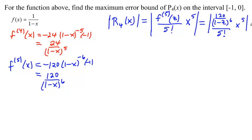Now, what we want to do is figure out the bound on that, this f of z part, or fifth derivative of f at z part, and so what we want to think about is what is that function doing as we go on the interval from negative 1 to 0.